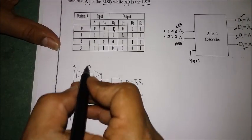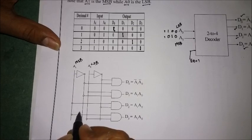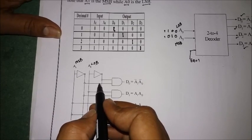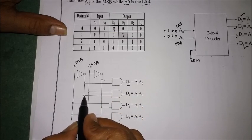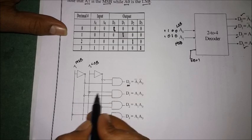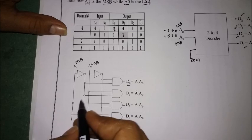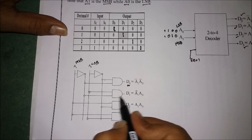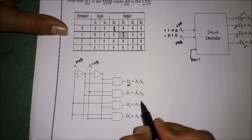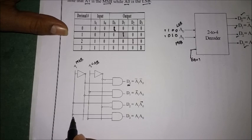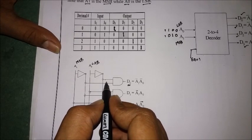Now let us draw the circuit diagram. Taking the LSB and MSB lines with their complements, for input 00 — A-bar and B-bar are connected to an AND gate giving D0. For 01, A-bar and A0 give D1. For 10, A and A0-bar give D2. For 11, A1 and A0 give D3. There is also the enable line connected to each AND gate.